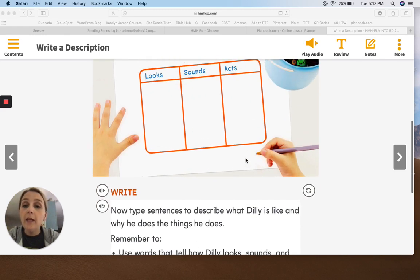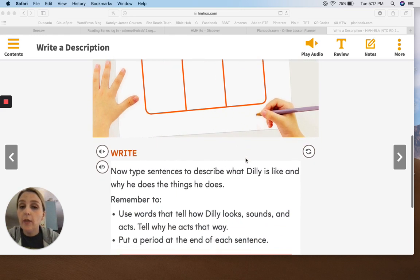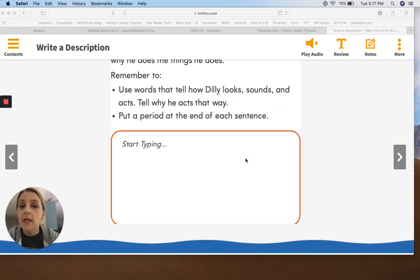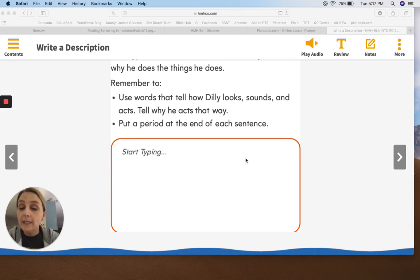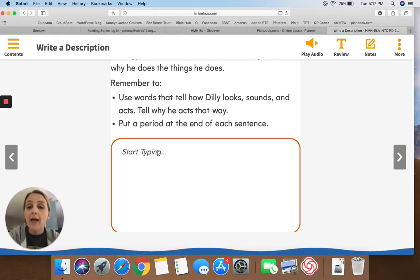Now that you have planned, we're going to go over to the next page right beside this one. And you're going to write some sentences that tell about Dilly. So I might want to say Dilly is. That would be a great way for your sentence to start.